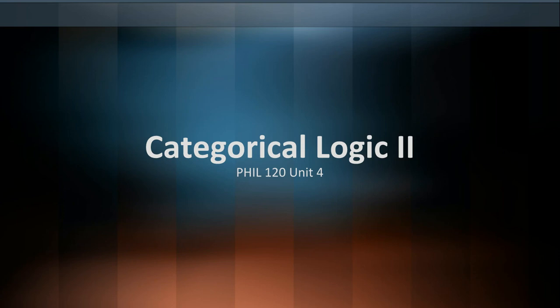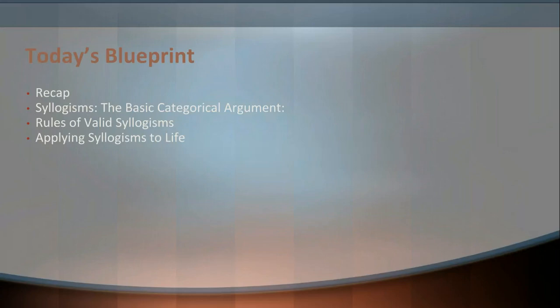Hey folks, welcome back to the video lectures for Philosophy 120, Critical Thinking, where we continue our unit on Categorical Logic, the first of several different logical systems we're going to be digging into. As a blueprint for today's lecture, first we're going to recap some of the vocabulary I threw at you last time, and then we're going to start looking at actually building arguments using those different statements and relationships between categories — between groups of things — and how they fit together.